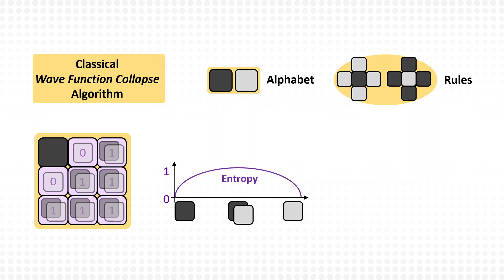According to the rules, the neighboring tiles can only be bright now, and their entropy therefore drops to zero. In the next iteration, one of these tiles is selected at random and assigned a bright tile.